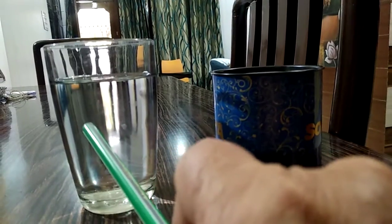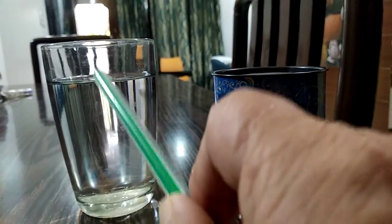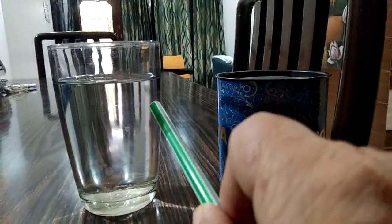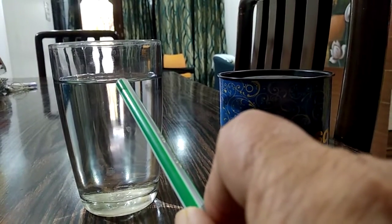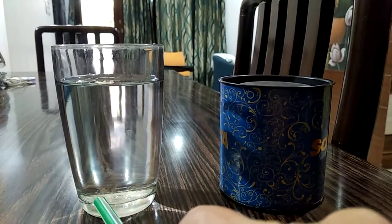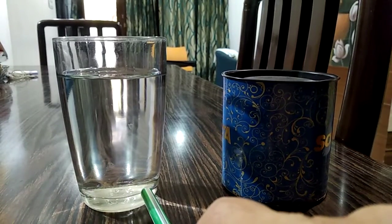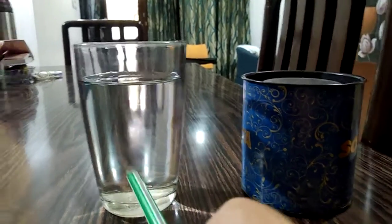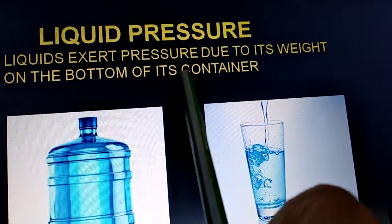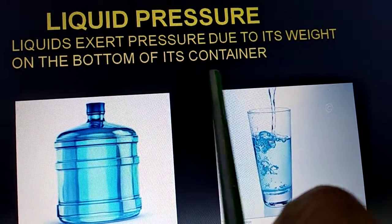See this glass — this glass is full of water. It is a liquid, and this liquid is contained in this glass. This liquid has got some weight, and that weight in terms of force is being applied at the bottom of the glass. Therefore we can say that liquids exert pressure due to their weight on the bottom of their container.